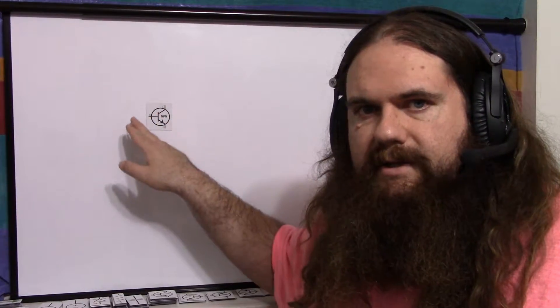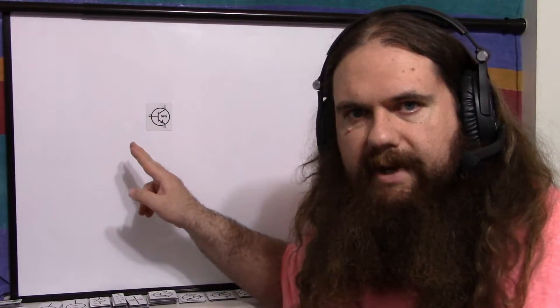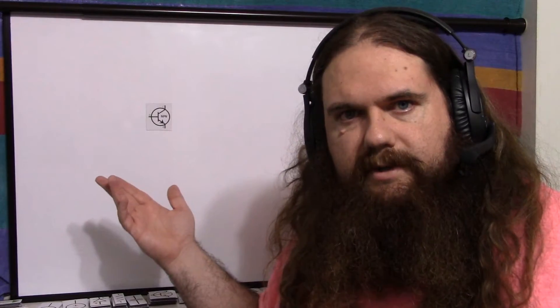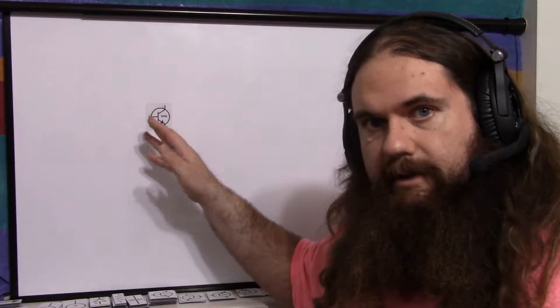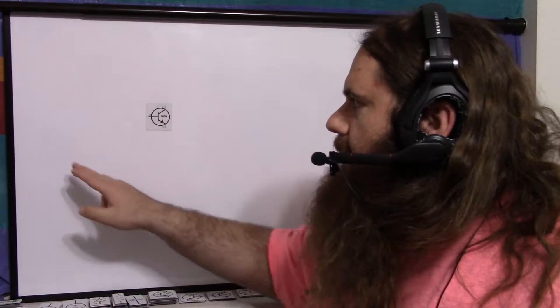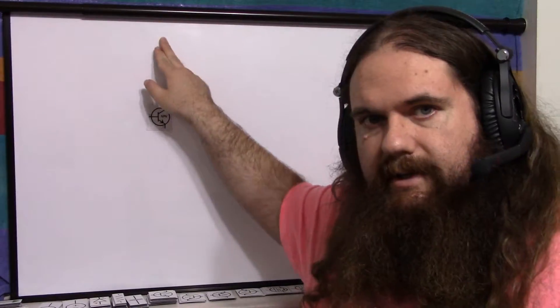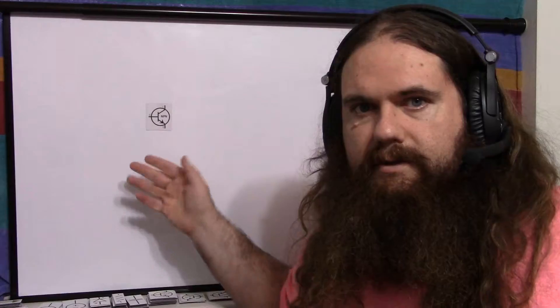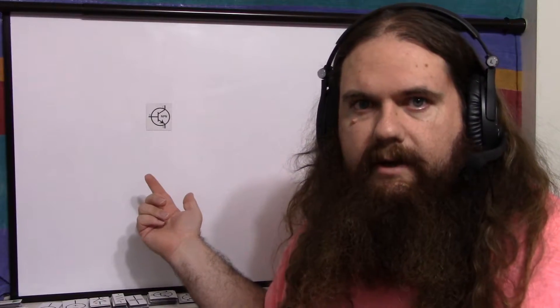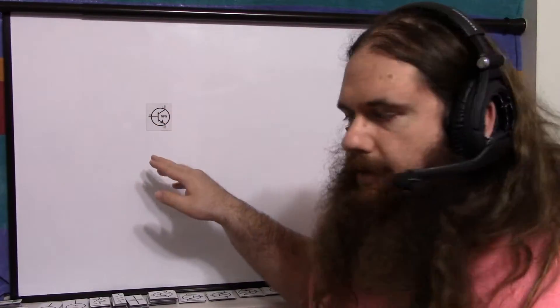Basically, common base means neither signal is applied to the base. Common emitter means neither signal is applied to the emitter. A common emitter amplifier, the input is on the base, the output is taken from the collector, so the emitter is just there. Common collector, we'll get into in the future. Right now, it's common base.